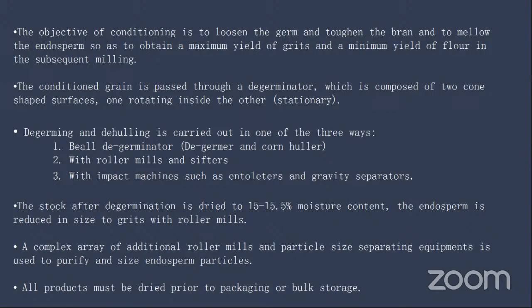To remove the germ, there is an instrument with two cones. One cone is stationary, and the other cone rotates. Grains are placed between the surfaces of both cones, and because of the friction generated, the germ is removed.